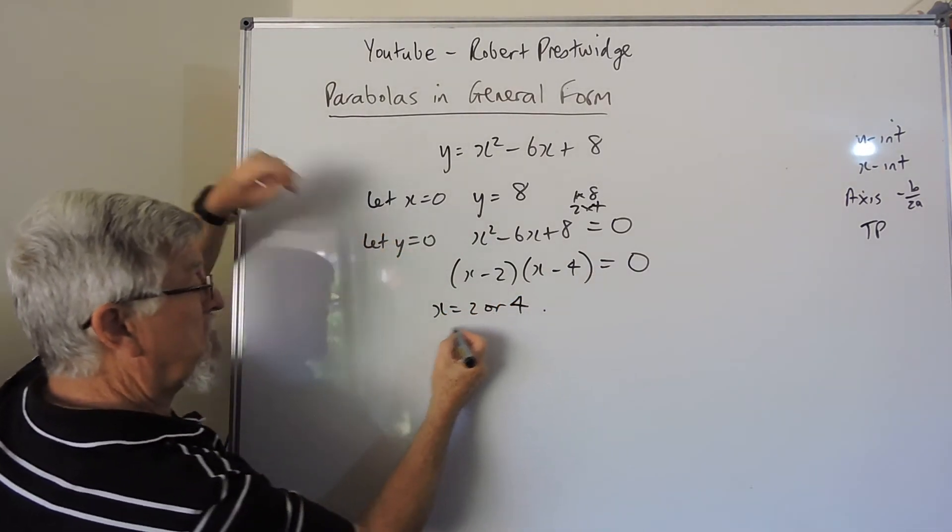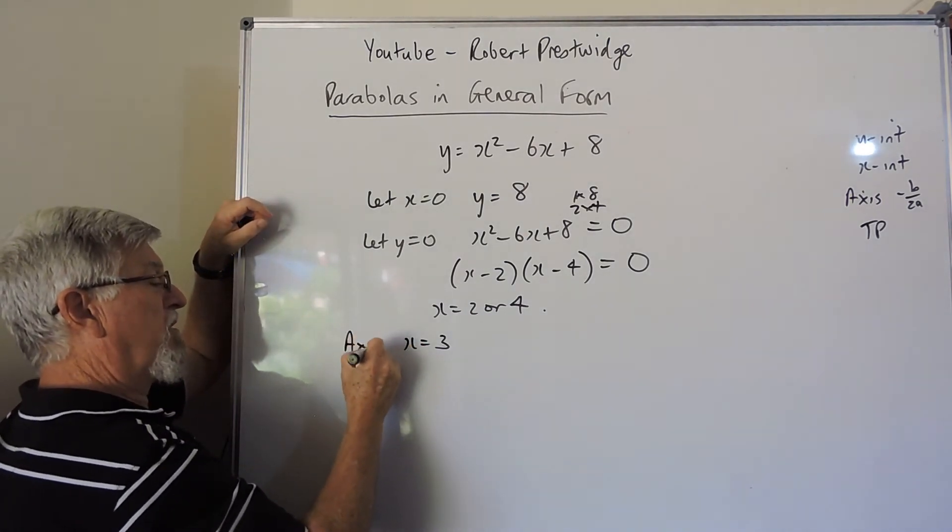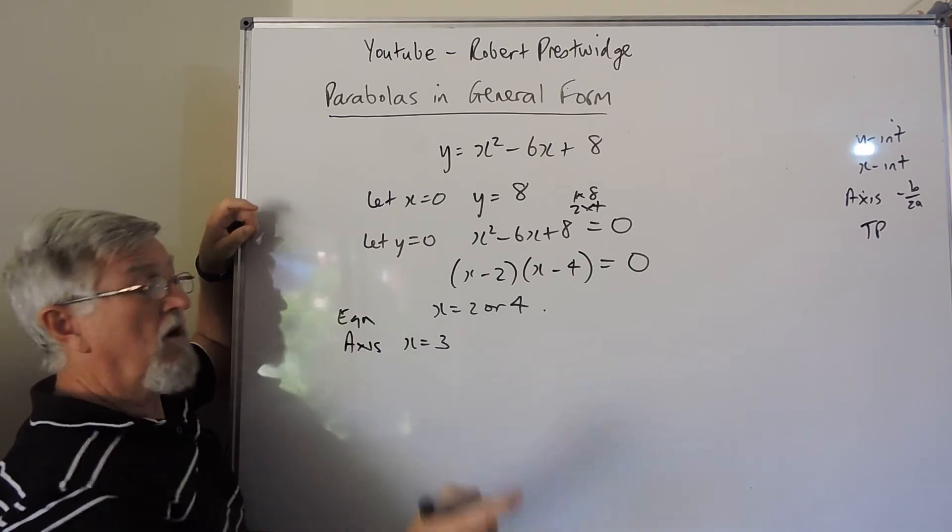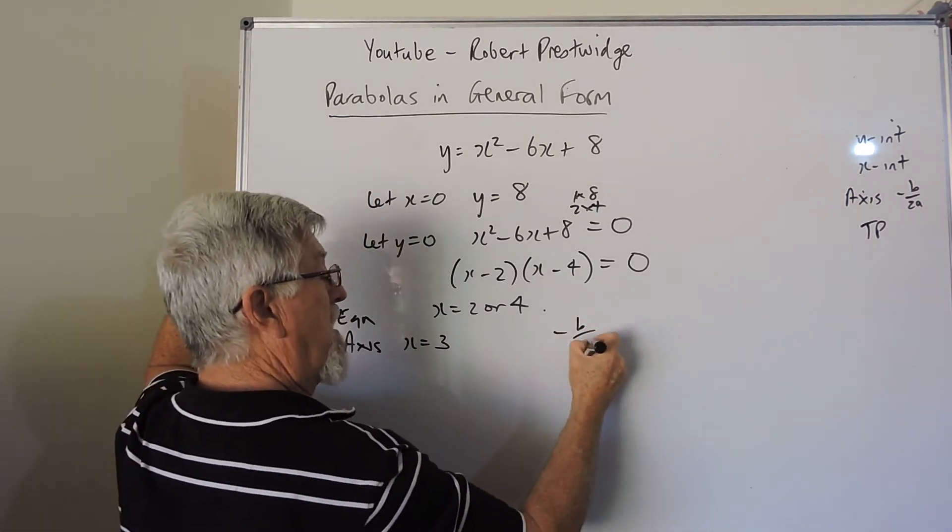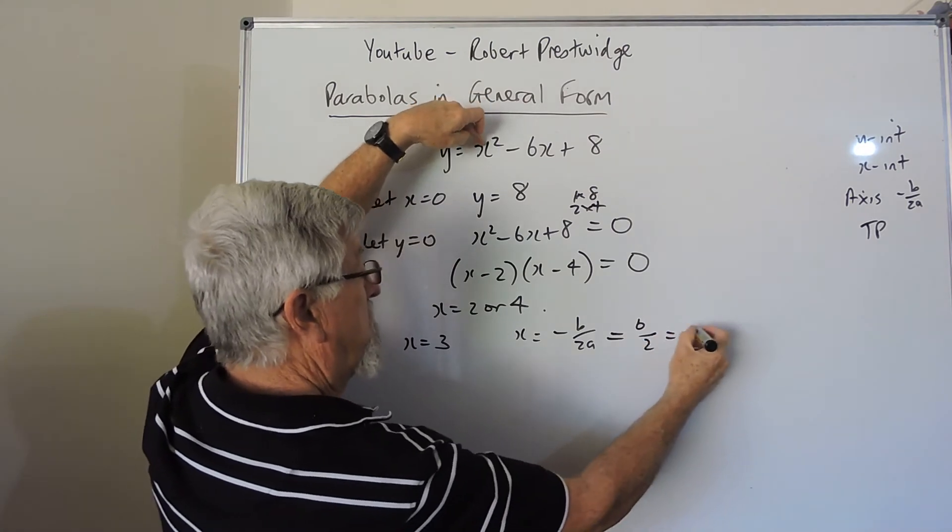Then we can talk about the axis, and there's two ways. Halfway between them is x equals 3, which is the axis, or we should talk about the equation of the axis. Or you can go minus b on 2a, and you get the same thing. So that's 6 on 2, which is 3.